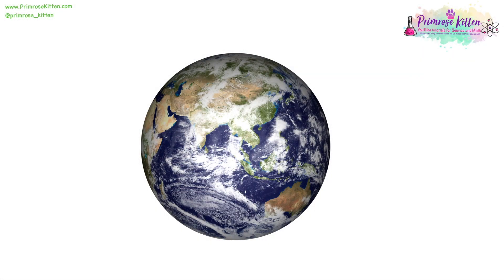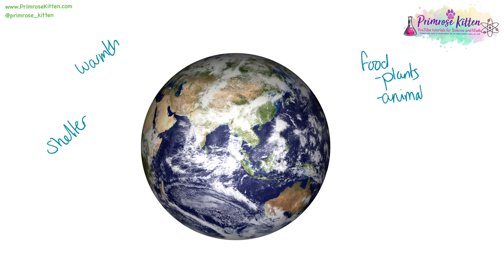The Earth provides us with many things, including warmth from the sun, shelter from the trees, food from plants and animals, and transport along rivers. We can get all of these from the rivers, the seas, the atmosphere, and the land.